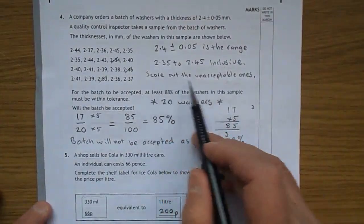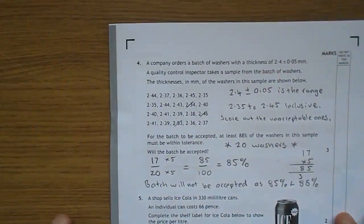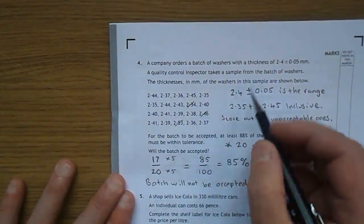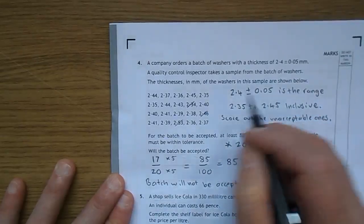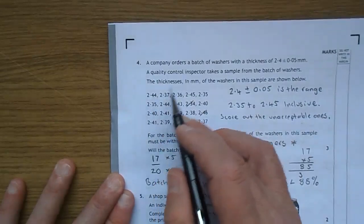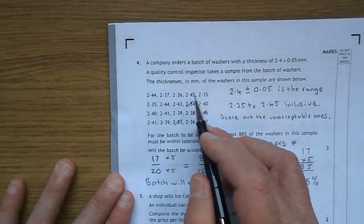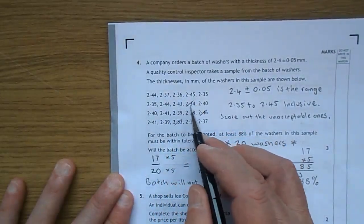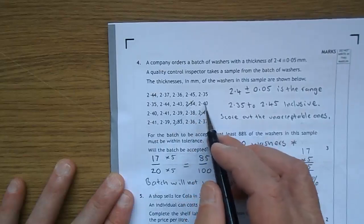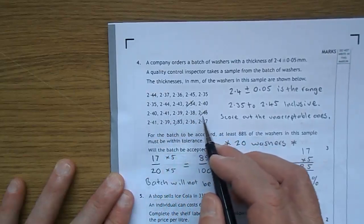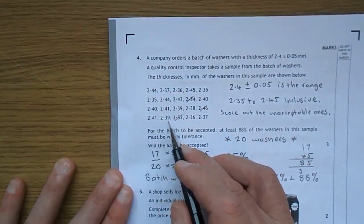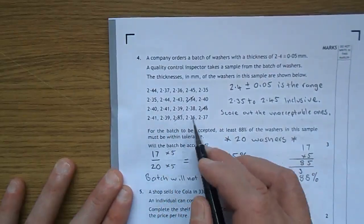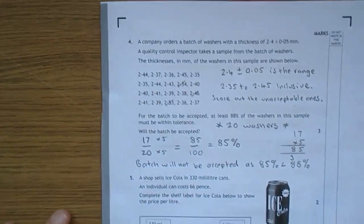What I decided to do was to score out the unacceptable ones. So as you can see, I think of this as 2.35 to 2.45. We can score through them, and as you can see, anything out with the range 2.34 is too small, they're all okay. 2.46, that's too big, score it out. 2.53, too big, and the others are okay.